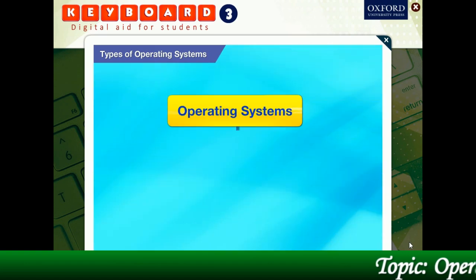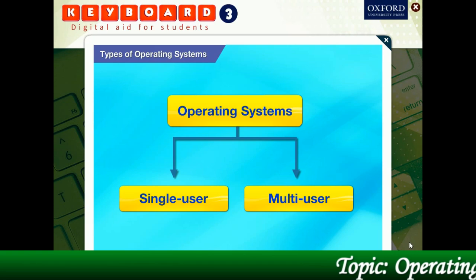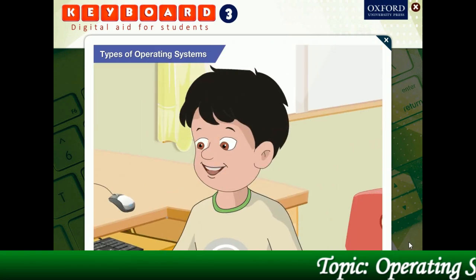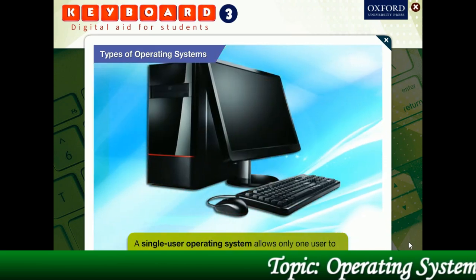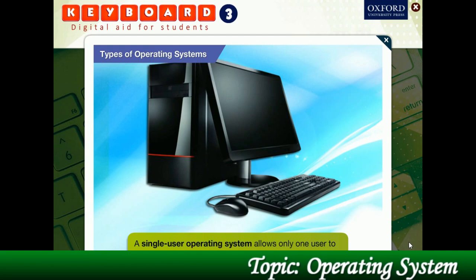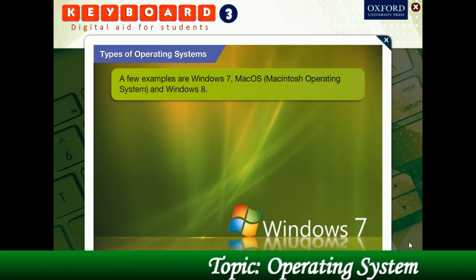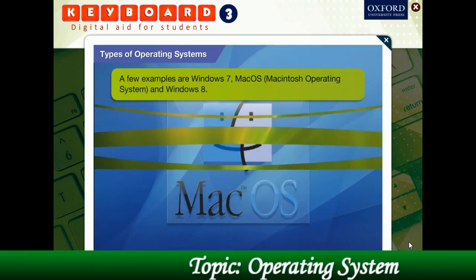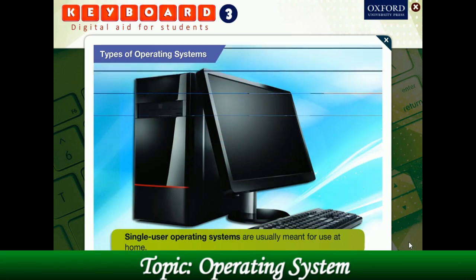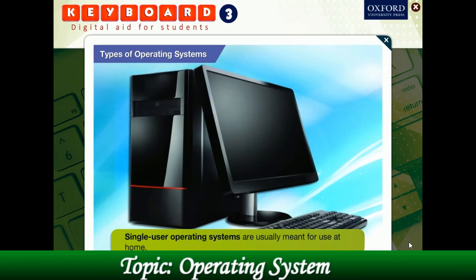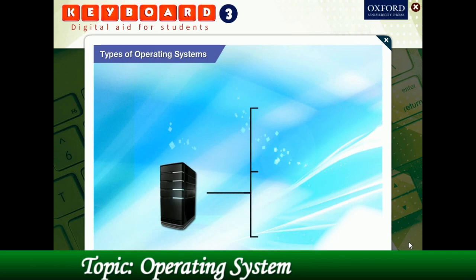Now, operating systems are of two types: single user and multi-user. What's the difference between them? A single user operating system allows only one user to work on it at a time. A few examples are Windows 7, Mac OS or Macintosh operating system, and Windows 8. Single user operating systems are usually meant for use at home.